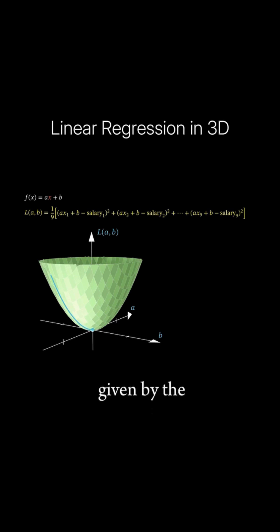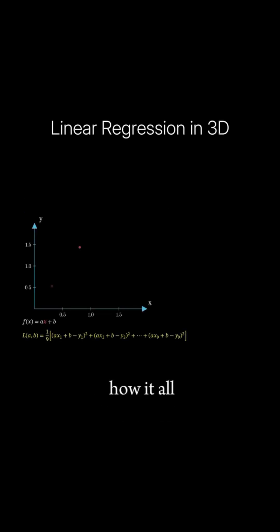This direction is given by the negative of the gradient, which is a vector of all partial derivatives of the function. Now let's see how it all works together.